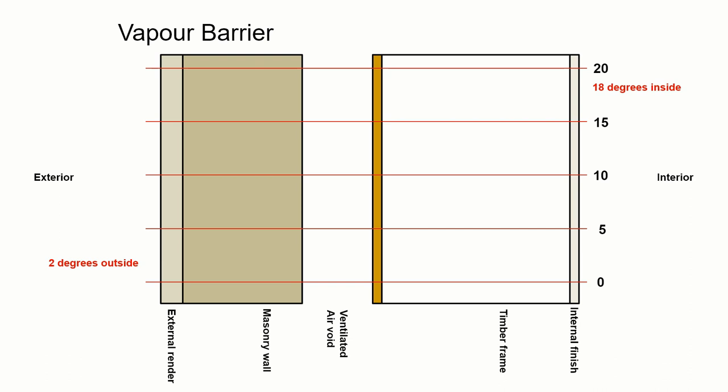Along the side we can map on some temperature levels from 0 to 20. If we had 18 degrees as the inside temperature and 2 degrees for the outside temperature, using the conductivity of each of the materials, we can figure out where the temperature graph is going to be across this wall section.